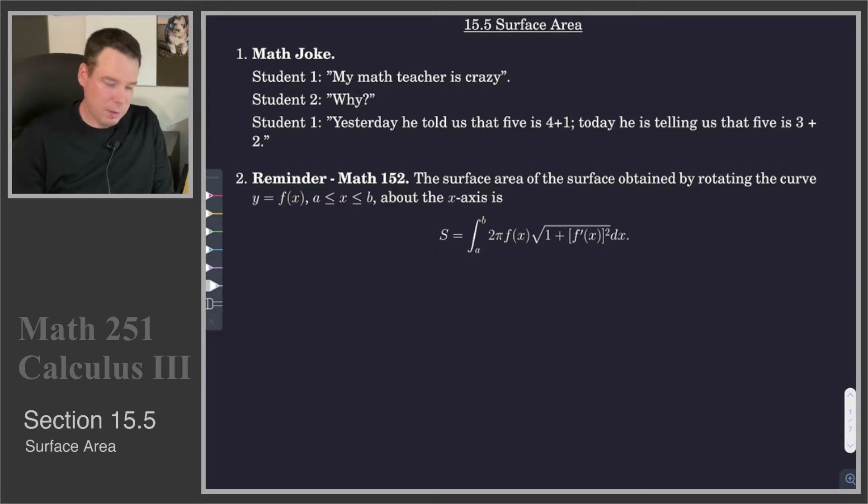Let's just remind ourselves that in Calculus 2 in Math 152, we did work out the surface area of a surface, but in that case it was a surface of revolution. So if we were rotating a curve y equals f of x about the x-axis, then we had this integral formula for the corresponding surface area. So here was the picture we had.